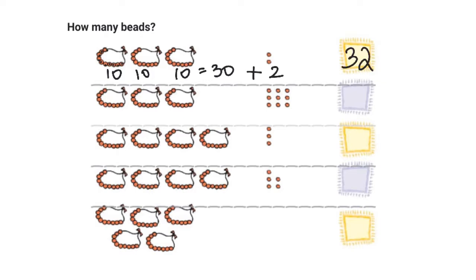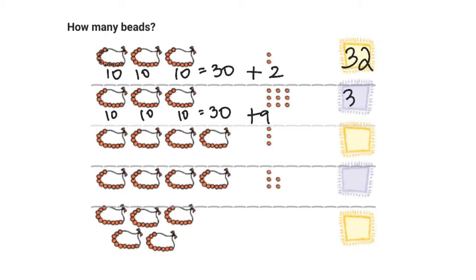In the next example, I see three necklaces, so each necklace has ten beads. Ten plus ten plus ten gives me thirty, plus I have one, two, three, four, five, six, seven, eight, and nine — nine beads. So thirty plus nine gives me the number thirty-nine.